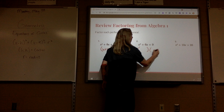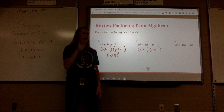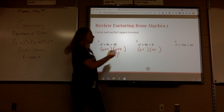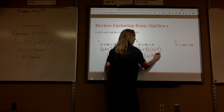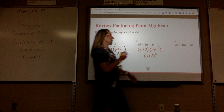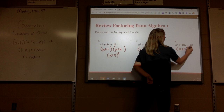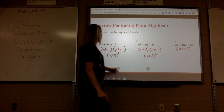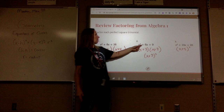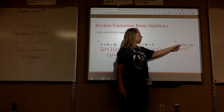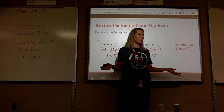This one — what two numbers multiply to be 9 but add to be 6? 3 and 3. So that's really x plus 3 squared. And then this one would be x plus 5 squared. Do you notice anything about the middle term and this number? The middle term is always half. Keep that in mind.